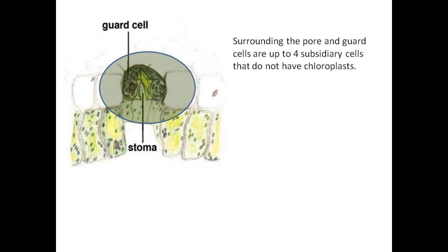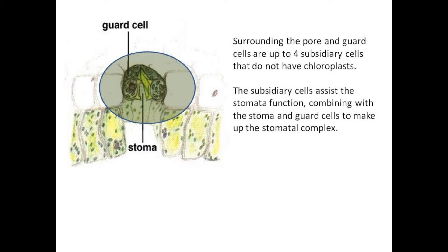Surrounding the pore and guard cells are up to four subsidiary cells that do not have chloroplasts. The subsidiary cells assist the stomata function, combining with the stoma and guard cells to make up the stomatal complex.